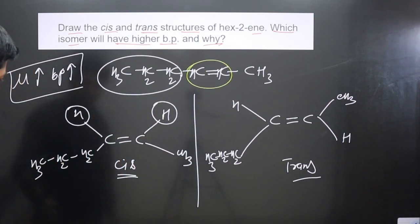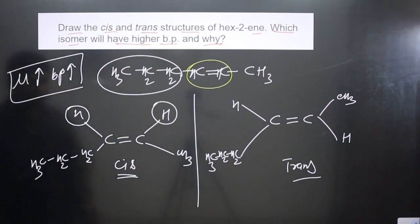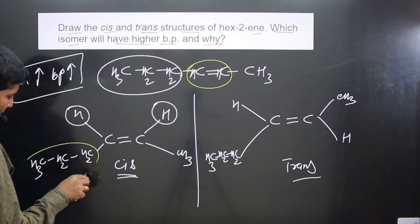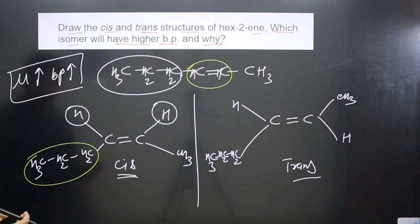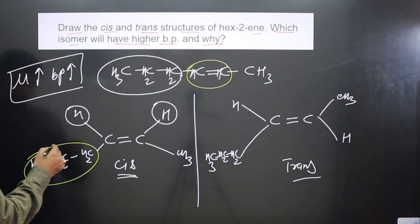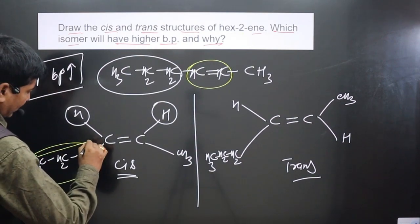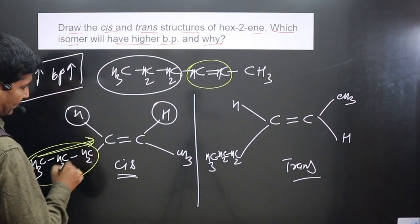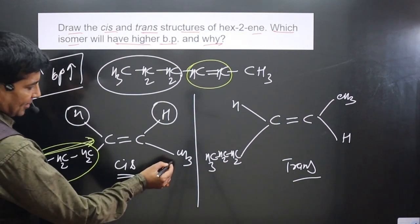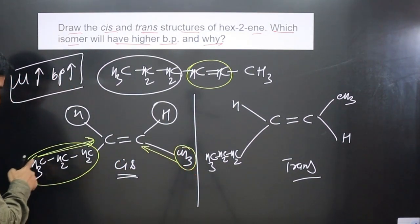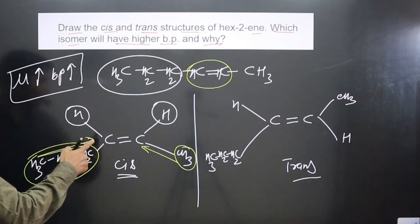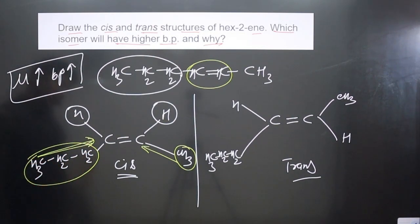The alkyl groups here are considered electron-donating groups in organic chemistry due to the inductive effect. You can see that each alkyl group is supplying electron density. On one side we have a CH3 group donating electron density, and on the other side we have a larger alkyl group — CH2CH2CH3 — which donates more electron density because it has more carbon atoms.